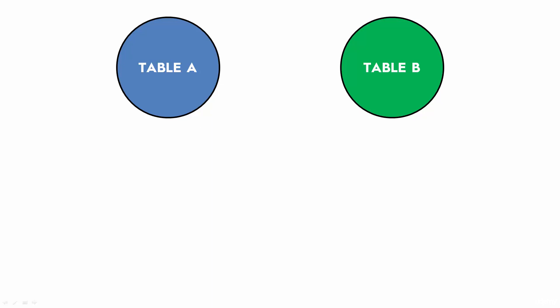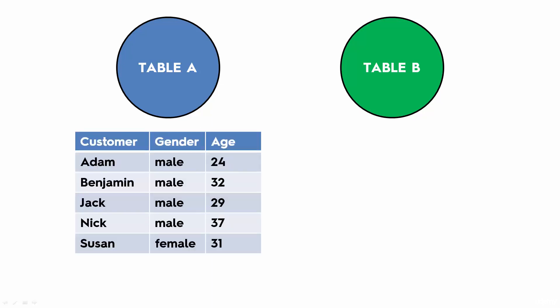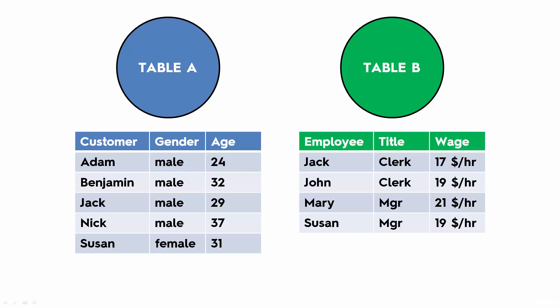In our example, Table A will have the following rows. It has three columns: customer, gender, and age. It's basically a table describing our customers, so we've got five customers — Adam, Benjamin, Jack, Nick, and Susan — with their genders and ages listed. Table B is a table of employees of our store, with the employee name, title, and wage.